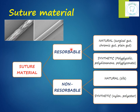Examples of resorbable sutures: natural resorbable includes surgical gut, chromic gut, and plain gut. Synthetic resorbable includes polyglycolic acid, polydioxanone, and polyglyconate. Non-resorbable natural: silk. Non-resorbable synthetic: nylon and polyester.